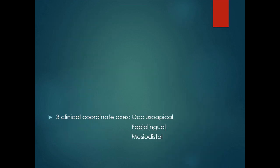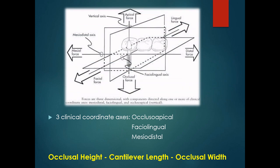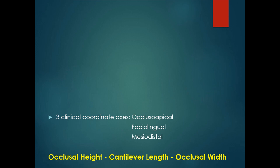There are three clinical coordinate axes — occluso-apical, faciolingual, and mesiodistal — and a total of six moments may develop about these three axes. These moment loads induce micro-rotations and stress concentration at the crest of the alveolar ridge at the implant-tissue interface, which leads inevitably to crestal bone loss. There are also three clinical moment arms in implant dentistry: occlusal height, cantilever length, and occlusal width.